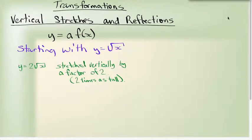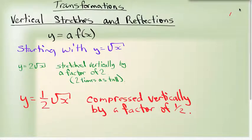If I look at something like y equals one half square root of x, this has been compressed vertically by a factor of a half. To put it in words, it means that my function is going to be half as tall.